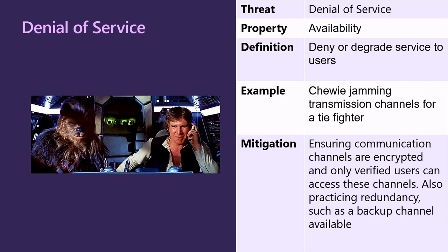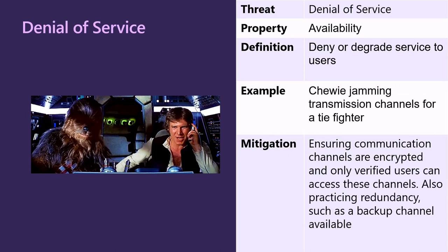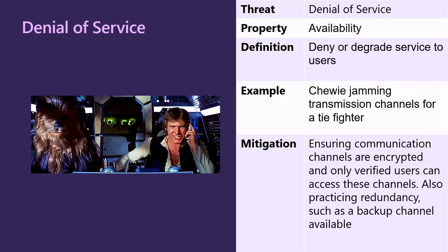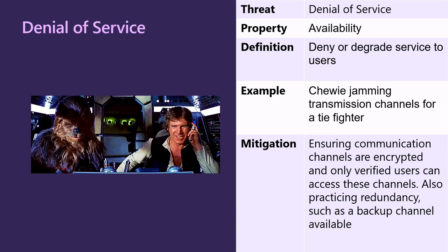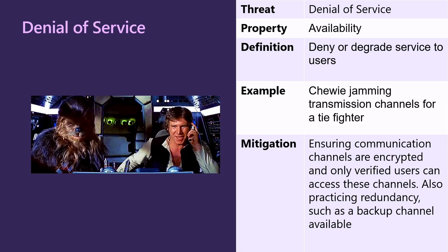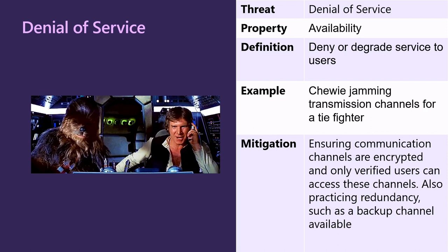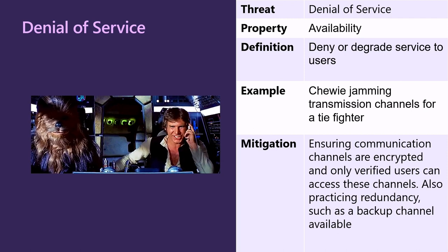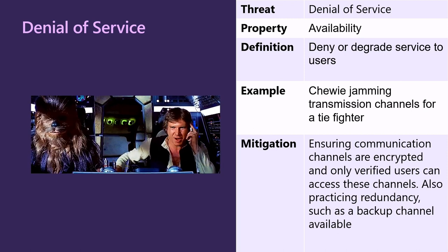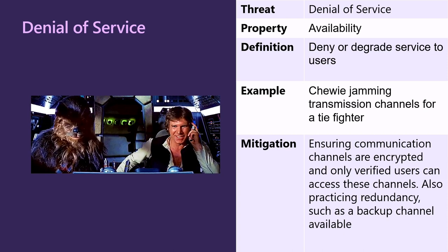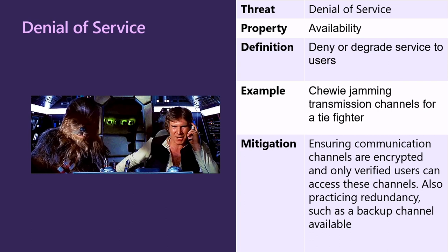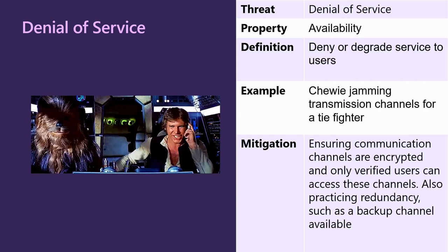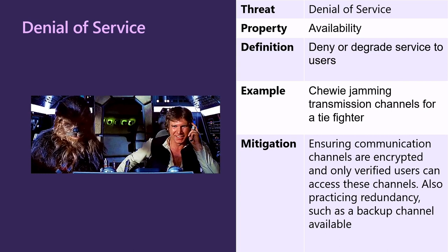D stands for Denial of Service — the property of availability — to deny or degrade services to users. In our example, Chewy jamming transmission channels for a TIE fighter. Possible mitigations include ensuring communication channels are encrypted and only verified users can access these channels, and practicing redundancy such as backup channel availability.